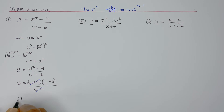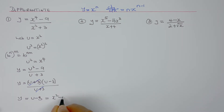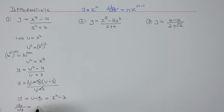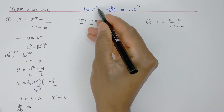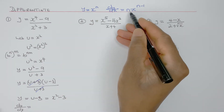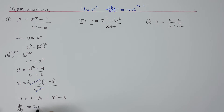Now I've got y equals just u minus 3, which equals x squared minus 3. So if I differentiate that, dy/dx — applying the rule x to the n gives n times x to n minus 1, with n equal to 2 — gives 2x to the power 2 minus 1, so that would be 2x.